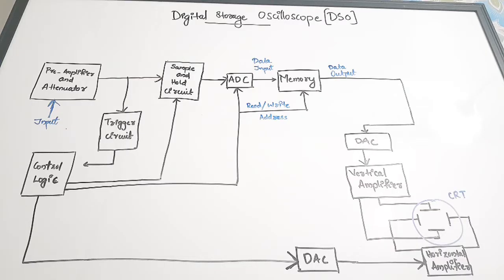In today's video we are going to discuss about the digital storage oscilloscope or DSO. We will be discussing the block diagram, its working, its modes of operation, and also some important questions connected with the digital storage oscilloscope. This is a very common device in all the laboratories. If you have not seen the video on cathode ray oscilloscope, please watch that video first, then watch this video - you will get a more clear picture.